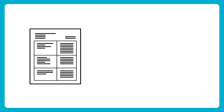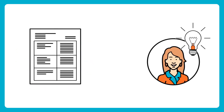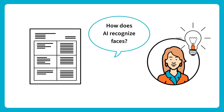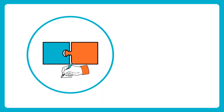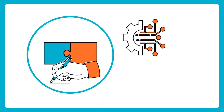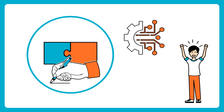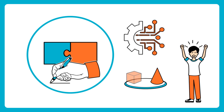Next, craft a compelling script. Keep it short to avoid overwhelming the audience. Hook them with a question like, how does AI recognize faces? And break it down step by step. Use storytelling and analogies, like comparing AI learning to a child recognizing patterns in a picture book.